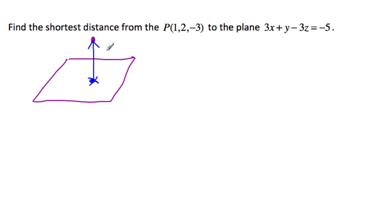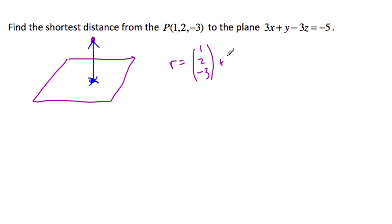So this blue vector here, which is the normal vector (3, 1, -3), we're going to use it to create a line. And that line will be r equals (1, 2, -3) plus t times this direction, (3, 1, -3).